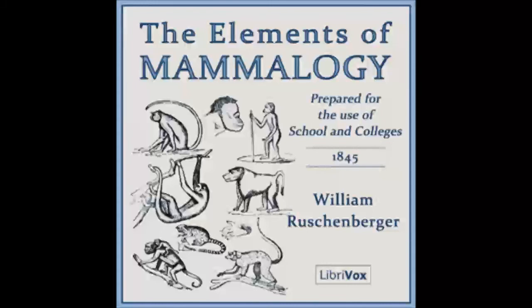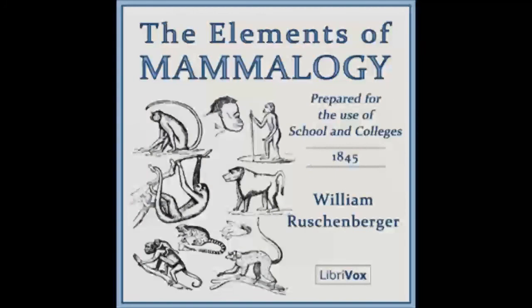Division of the class of Mammalia into Orders. The class of Mammalia is divided into nine orders, which are easily distinguished one from the other by the differences observable in the conformation of their extremities, of their teeth, and some other organs. The chief characteristics of these groups are indicated in the following synoptical table of the classification of the Mammalia.